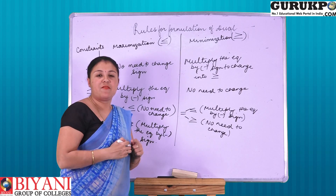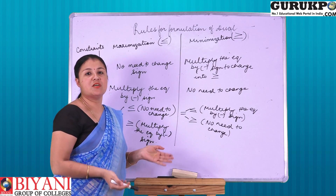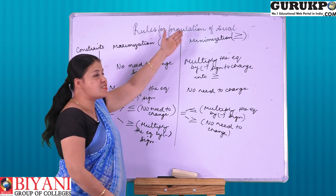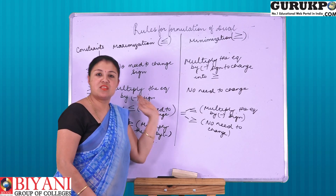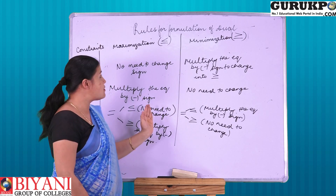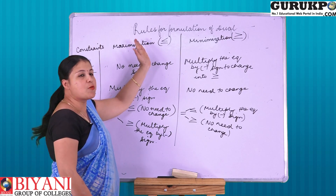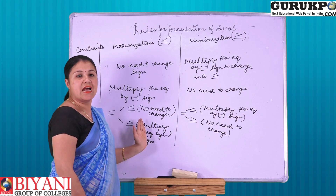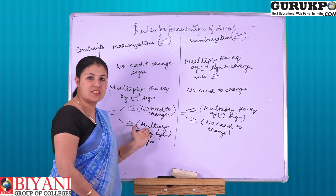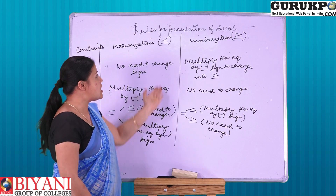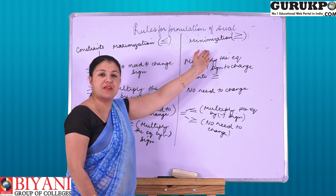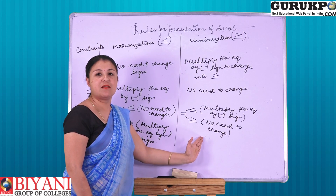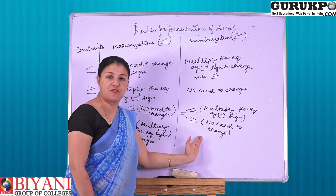So, in order to convert a problem to its dual, we have to first follow these procedures: if the problem is in maximization form, then all the constraints have to be in maximization form; and if the problem is in minimization form, then all the constraints have to be in minimization form.